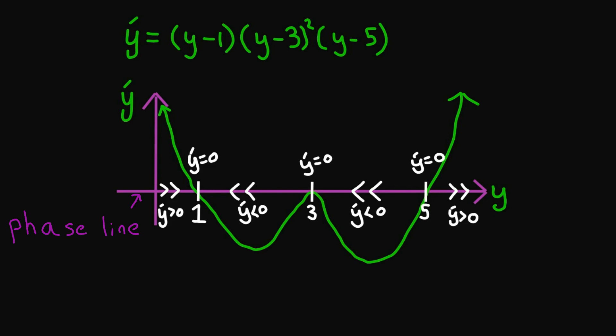Let's classify these equilibrium points. Starting at 1, if we nudge a little to the left, the arrows pointing right tell us we get pushed back to the right and hence back to 1. Similarly, if we nudge a little to the right, we get pushed back to the left and thus back to 1, so y equal to 1 is a stable equilibrium. Jumping over to 5, the arrows tell us that if we nudge to the left we keep traveling left away from 5, and if we nudge to the right we keep traveling right away from 5. Thus y equal to 5 is an unstable equilibrium.